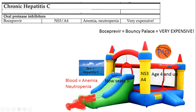For boceprevir: nothing more fun for a kid than a bouncy palace by the sea — 'boceprevir' maybe sounds like 'bouncy palace.' These are very expensive — as expensive as hiring a pro basketball player, which represents that it's an oral protease inhibitor. There's blood at the bottom of the bouncy palace for the anemia side effect. The method of action involves NS3/4A — the slide seats three people and is for ages four and up.